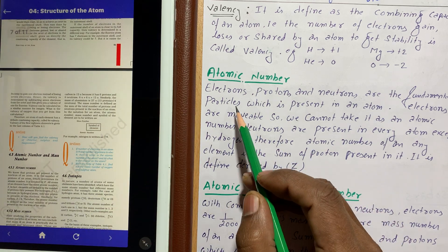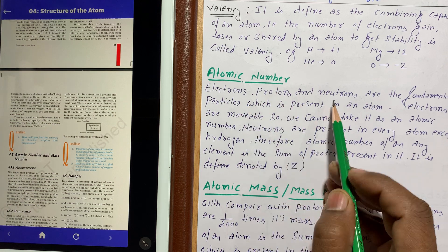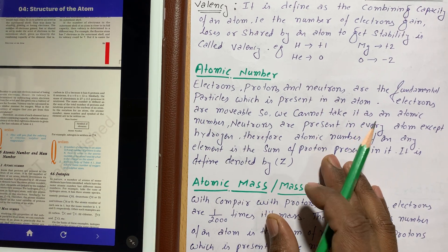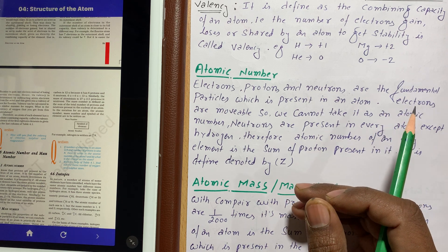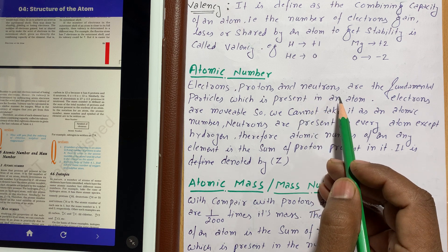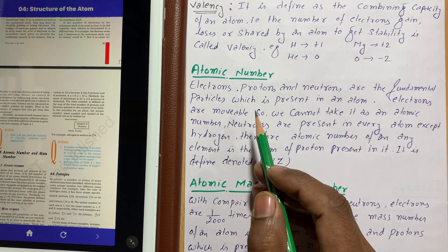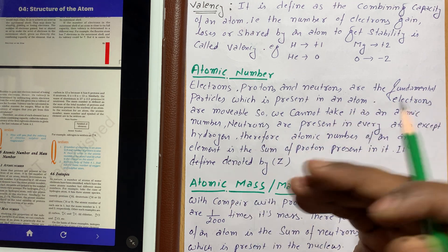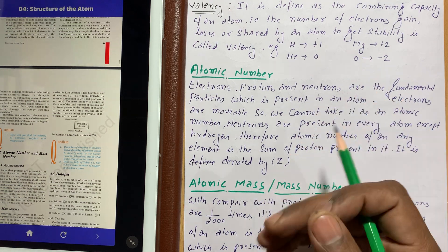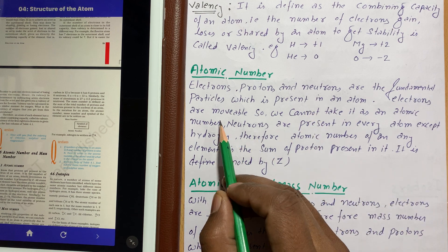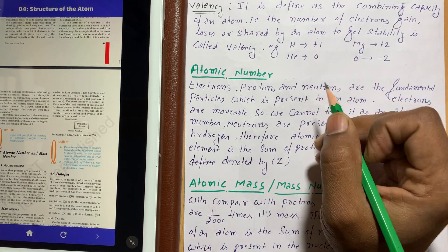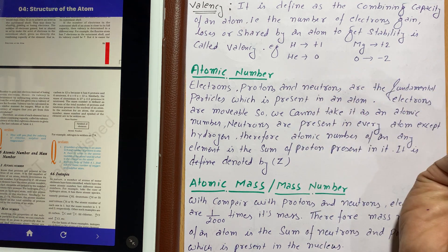Now let's go to atomic number. Electrons, protons, and neutrons are the fundamental particles present in atoms. From Rutherford's alpha ray scattering experiment, we know an atom has three fundamental particles: electrons, protons, and neutrons. The electron is movable — it can move from one atom to another. For example, sodium has 11 electrons and can lose the one in its outer shell. Oxygen needs 2 more electrons and can accept them.